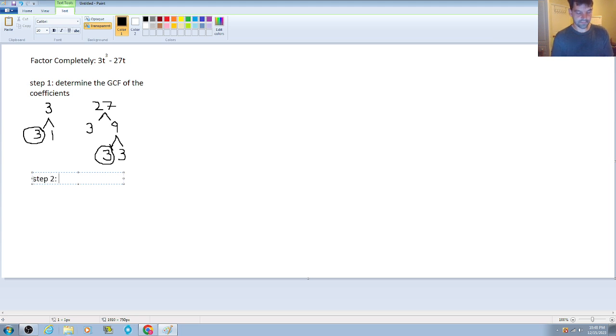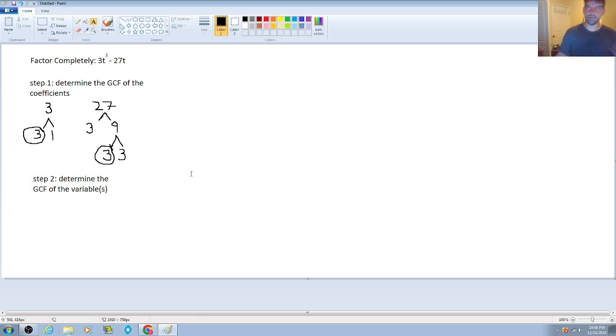So step two is going to be determine the GCF of the variables. So in this case, we only have one variable, but going forward, you may see multiple variables in your expressions. So for this one,